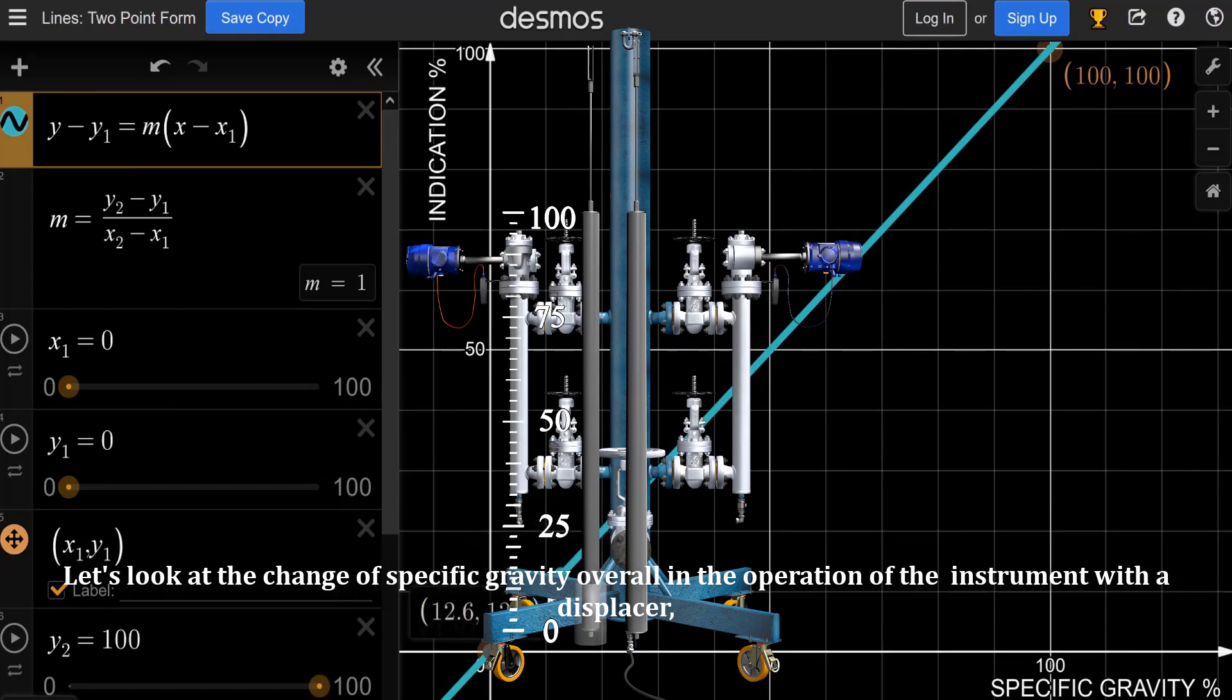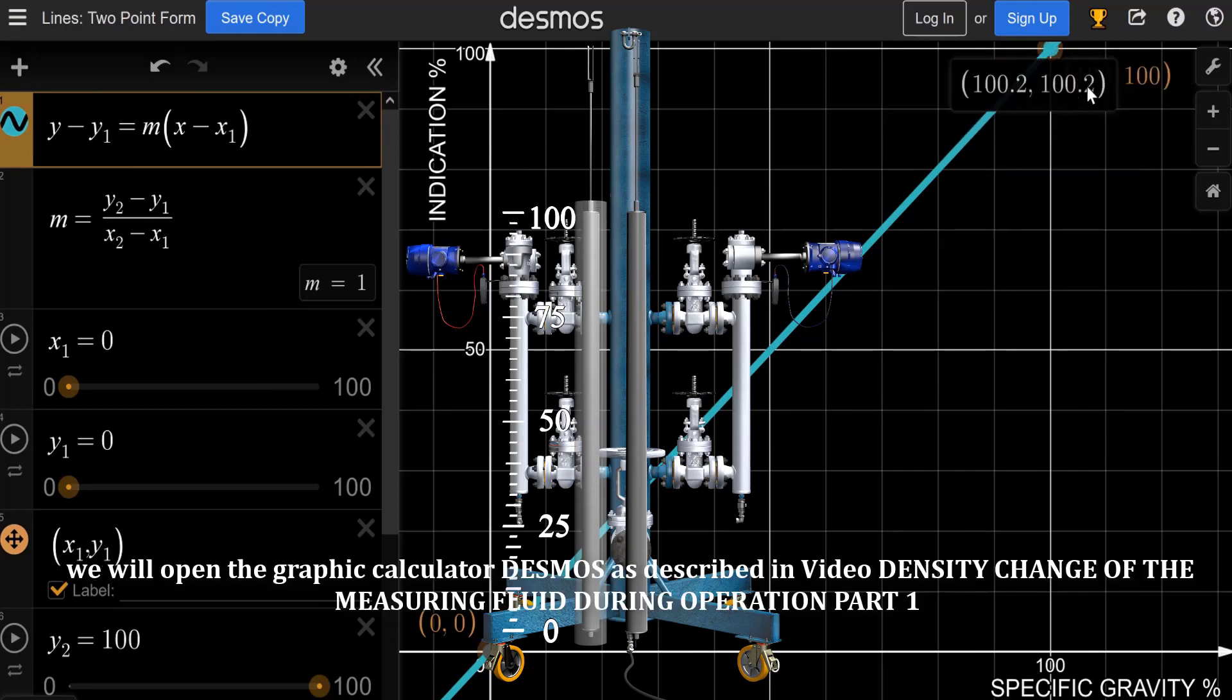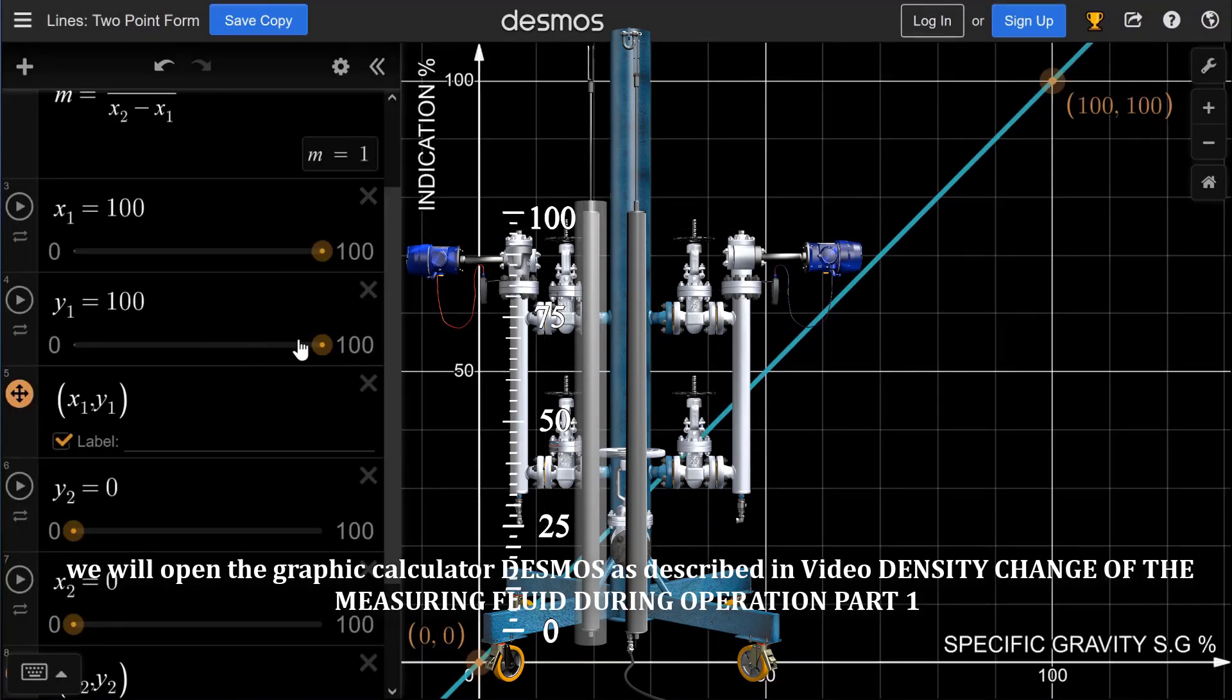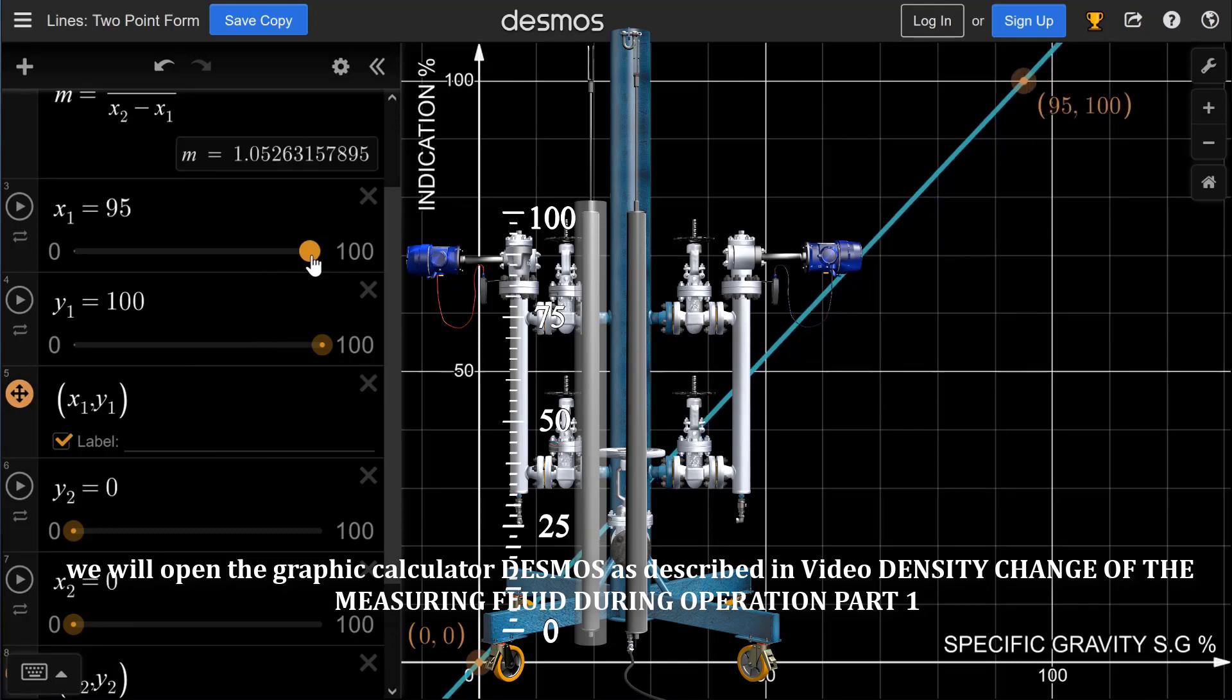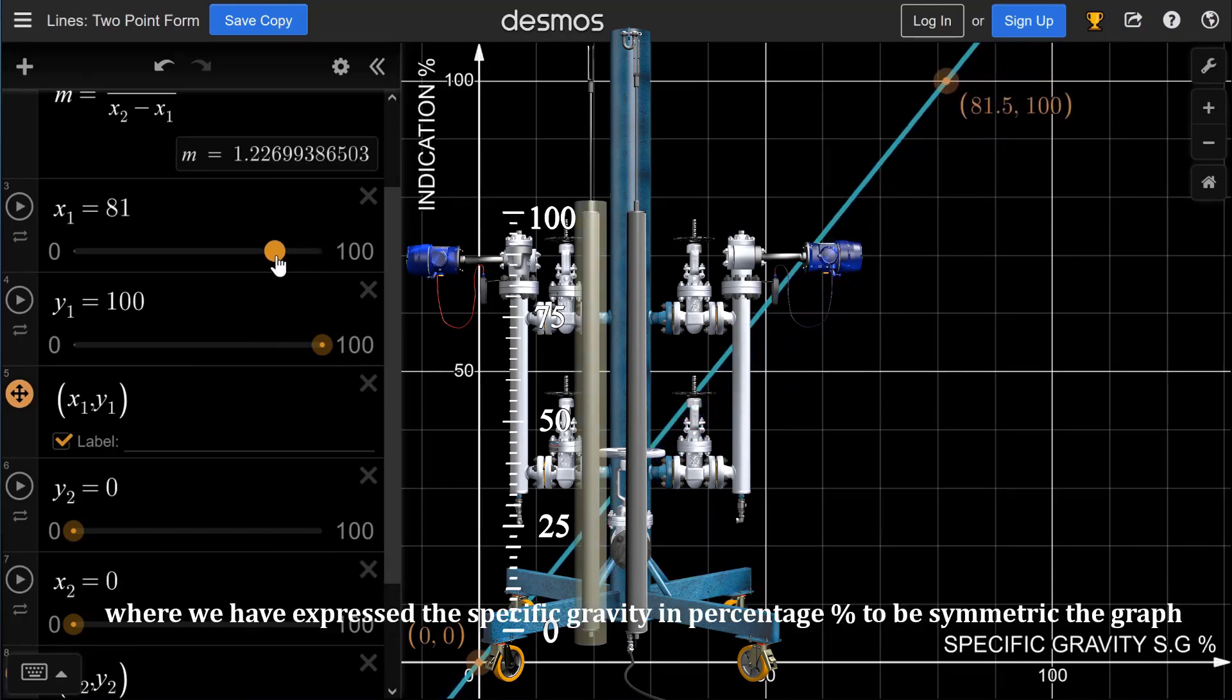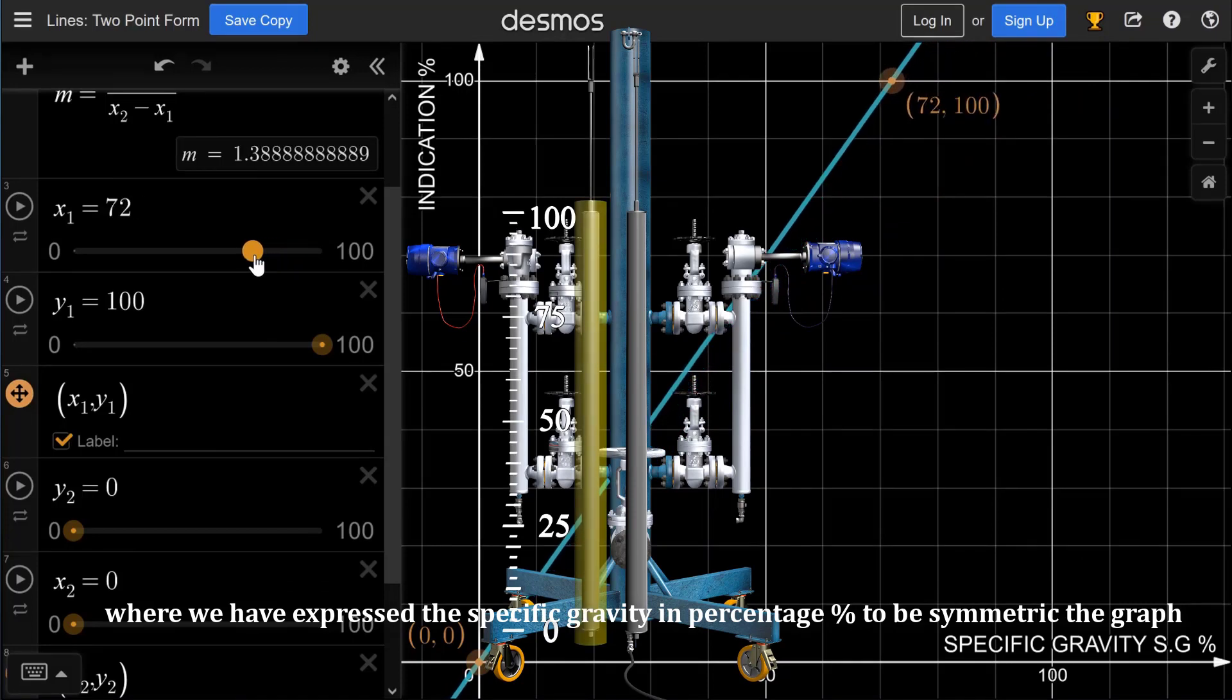Let's look at the change of specific gravity overall in the operation of the instrument with a displacer. We will open the graphic calculator Desmos, as described in video density change of the measuring fluid during operation part 1, where we have expressed the specific gravity in percentage to make the graph symmetric.